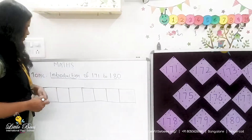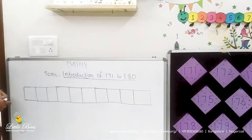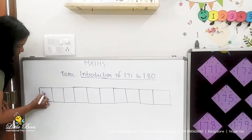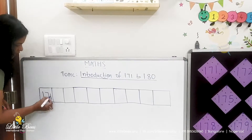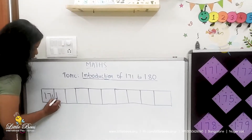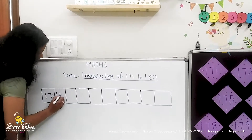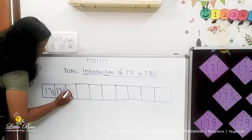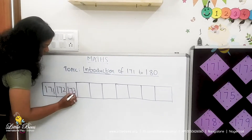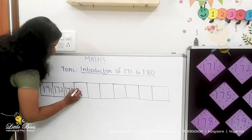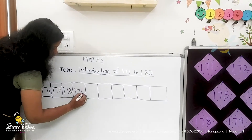So shall we write the numbers? Will you help me? Which is the number? 171. Next number? 172, 173,